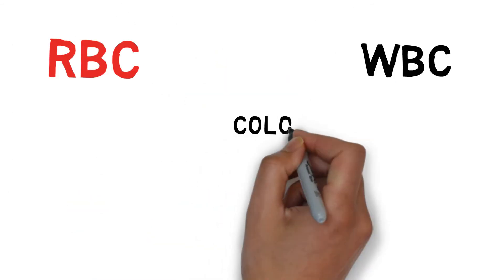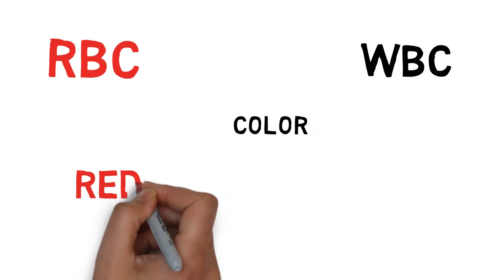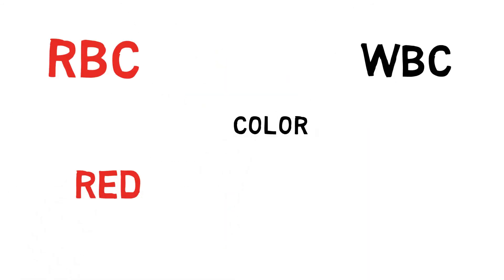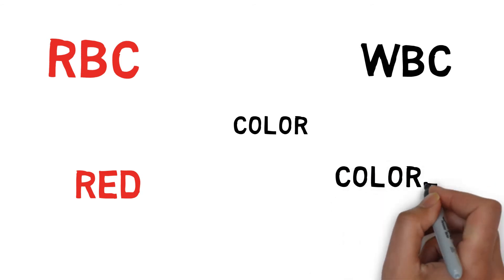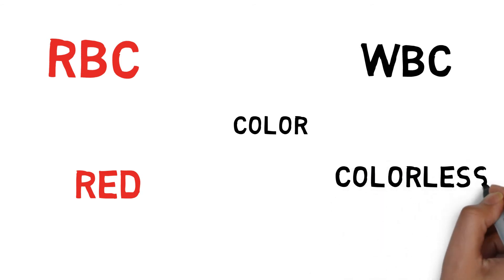The color of red blood cells is red because of the hemoglobin pigment. White blood cells are colorless because they do not contain any pigment.